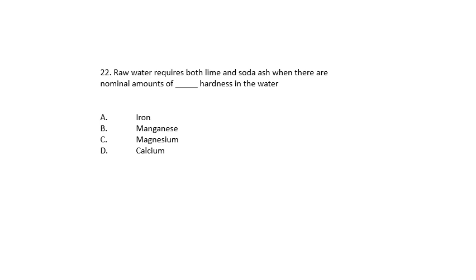Question 22. Raw water requires both lime and soda ash when there are nominal amounts of what kind of hardness in the water? Iron? Manganese? Magnesium? Or calcium? The answer is magnesium. So you're going to need soda ash because you're going to need to take the pH to a much higher level than if it's calcium hardness. So magnesium.